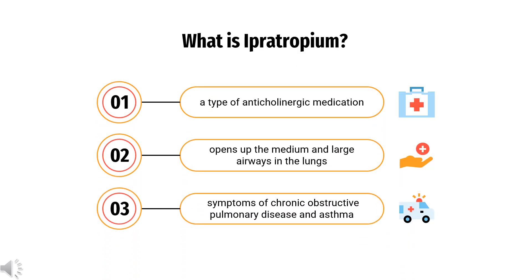What is Ipertropium? What class of drug is Ipertropium? Ipertropium bromide, sold under the trade name Atrevent among others, is a type of anticholinergic medication which opens up the medium and large airways in the lungs.